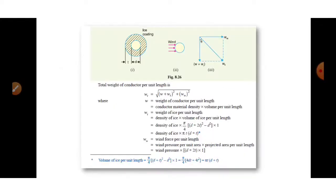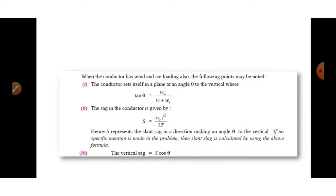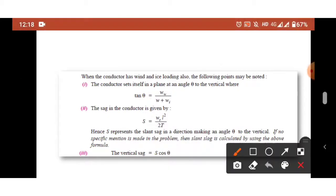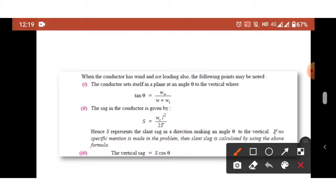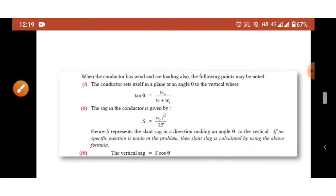Since the total weight acts at angle θ, this sag is called slant sag. The vertical sag is given by S·cos θ. This covers sag in overhead lines. Thank you.